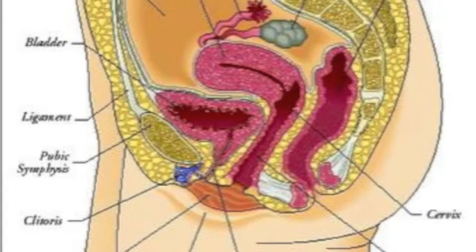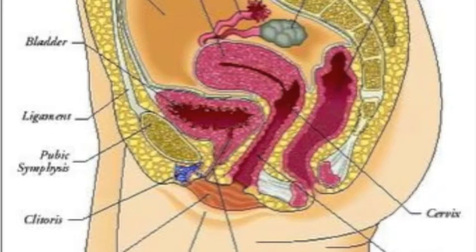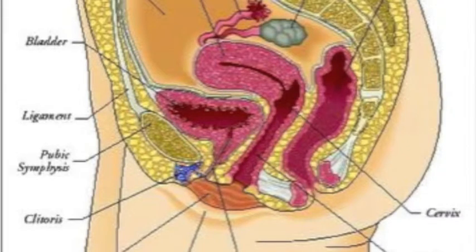The body of the uterus consists of three layers: the outermost protective lining called the parametrium (peri meaning surrounding), the huge muscular middle layer called the myometrium (myo meaning muscle), and the inner lining of the uterus — made up of about two layers of cells — referred to as the endometrium.